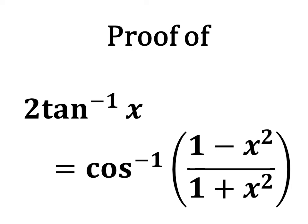In this video, we will learn to prove the trigonometry identity: 2 times inverse of tangent of x is equal to inverse of cosine of 1 minus square of x upon 1 plus square of x.